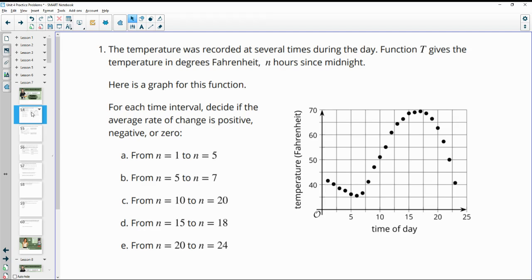Number one, the temperature was recorded at several times during the day. Function T gives the temperature in degrees Fahrenheit n hours since midnight. Here's the graph for this function. For each time interval, decide if the rate of change is positive, negative, or zero.